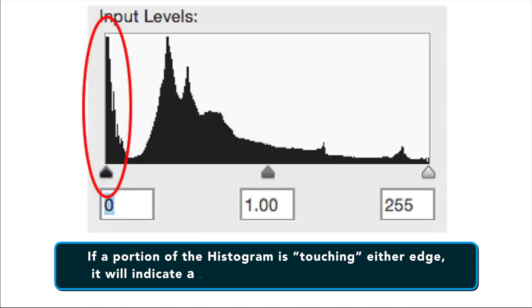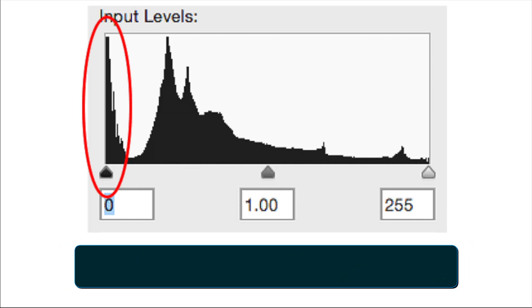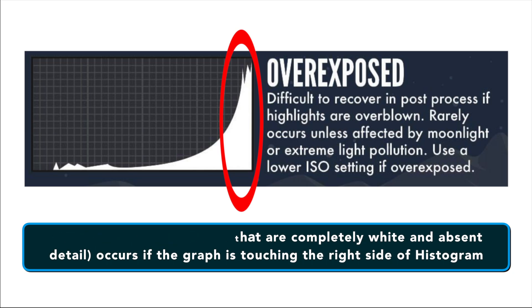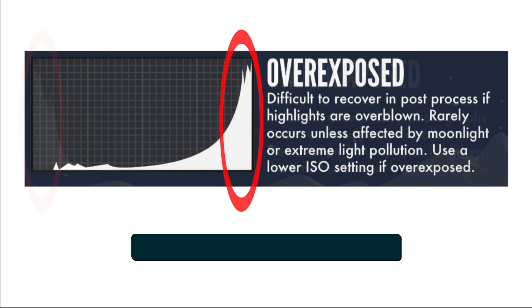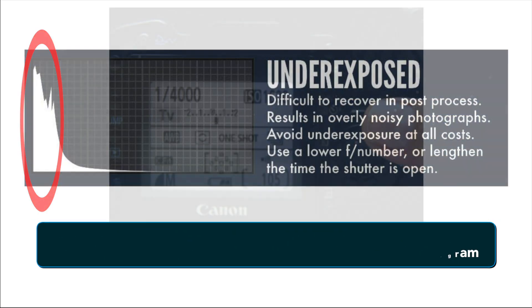A histogram is exposure dependent, but it's also affected by tone curve and other settings. If a certain portion of the histogram is touching either edge, it will indicate loss of detail, also known as clipping. Highlight clipping — areas that are completely white and absent of detail — occurs if the graph is touching the right side of the histogram. Shadow clipping — areas that are completely black and absent of detail — occurs if the graph is touching the left side of the histogram.